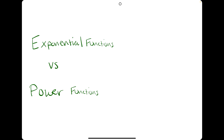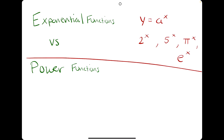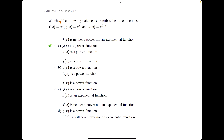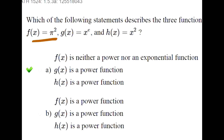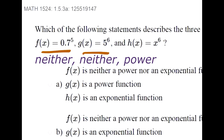An exponential function is anything of the form y equals a to the x, where a is a constant — for example, 2 to the x, 5 to the x, pi to the x, or e to the x. A power function is anything of the form y equals x to the a, where a is a constant — for example, x squared, x to the fifth, x to the pi, or x to the e. Keep in mind, if you see a function that does not have x in it, it is neither a power nor an exponential function.